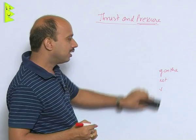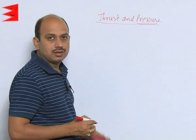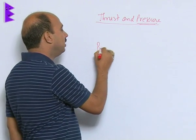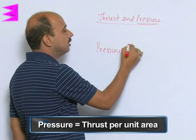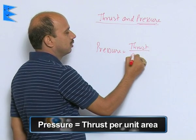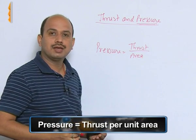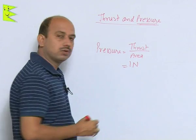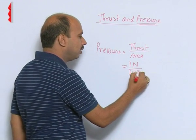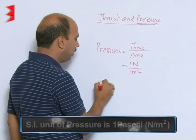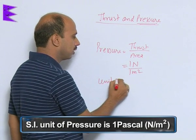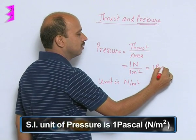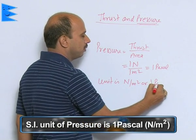As in the example about the sand — there is a depression in the sand — we can also refer to that as pressure. Basically, pressure is thrust upon area. Thrust per unit area is known as pressure. Thrust is measured in Newton — one Newton upon one meter square. So the unit is Newton per meter square, which is also written as one Pascal.